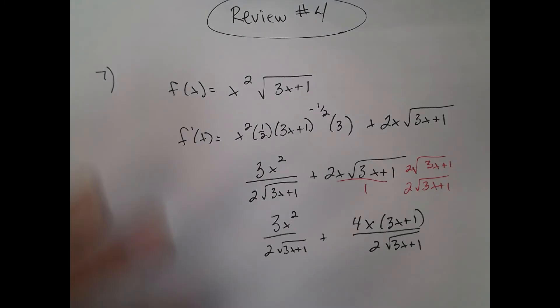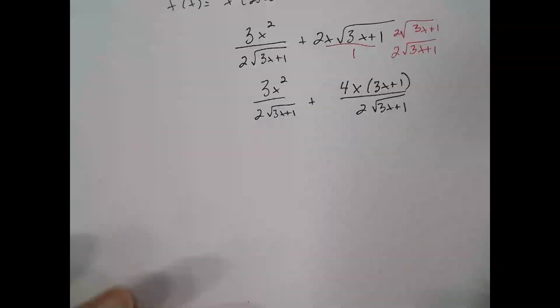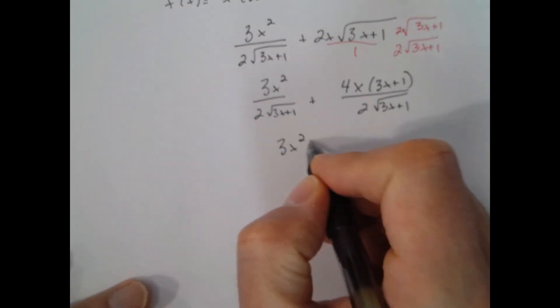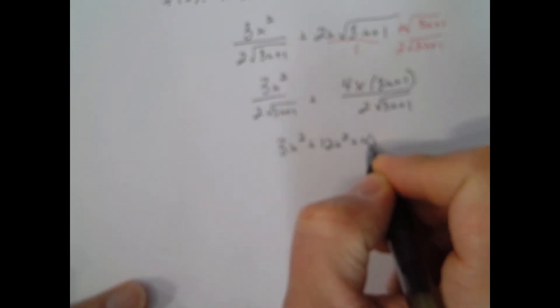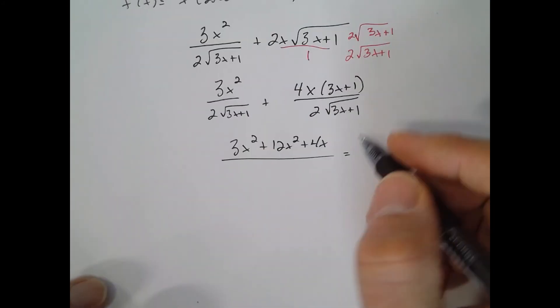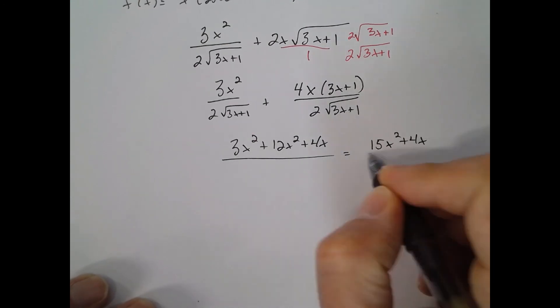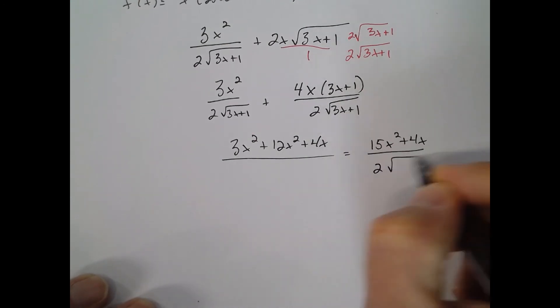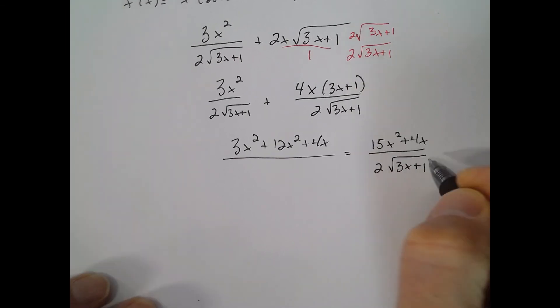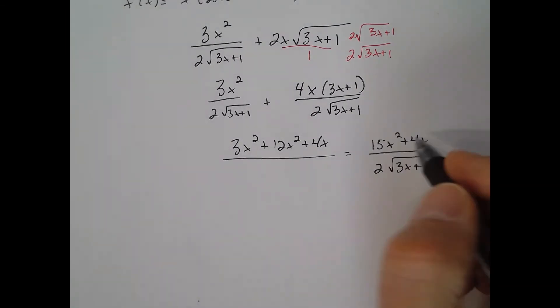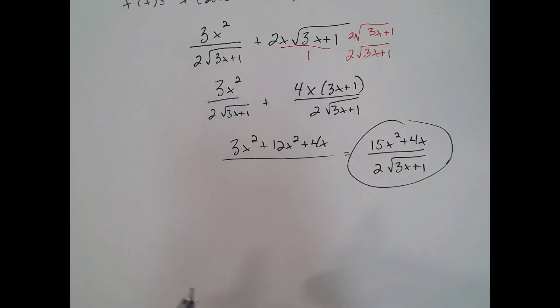Now if I combine them, I get three x squared plus twelve x squared plus four x on top, or 15 x squared plus four x over two square root of three x plus one. That should be completely simplified.